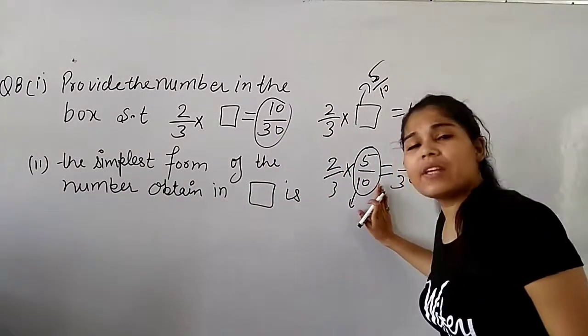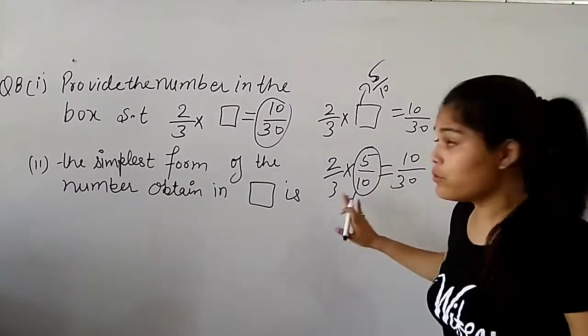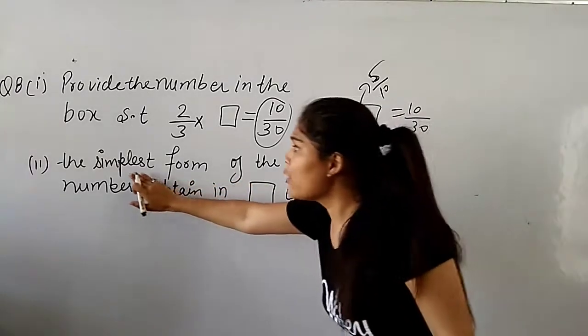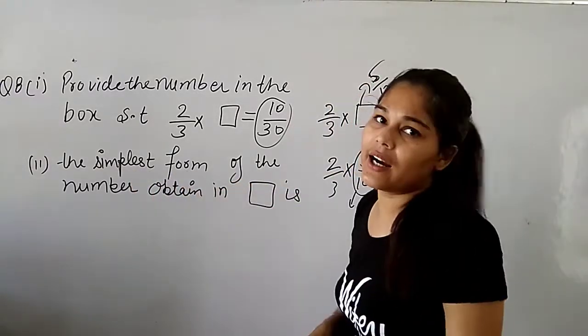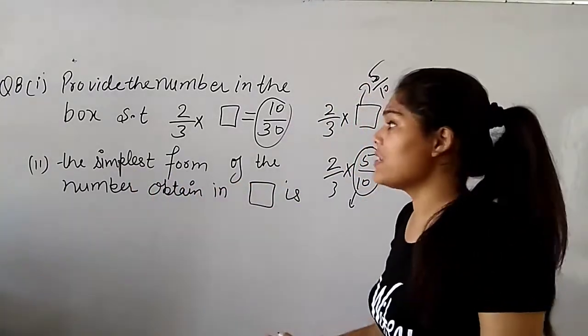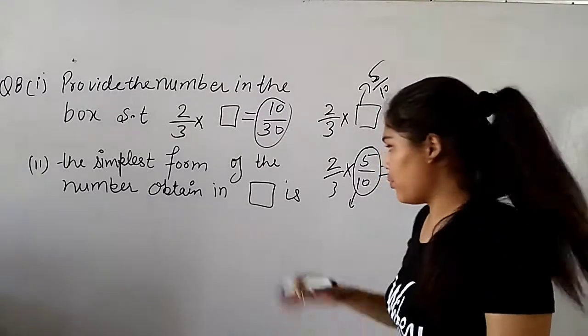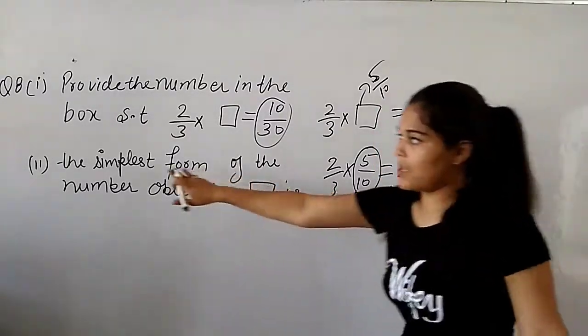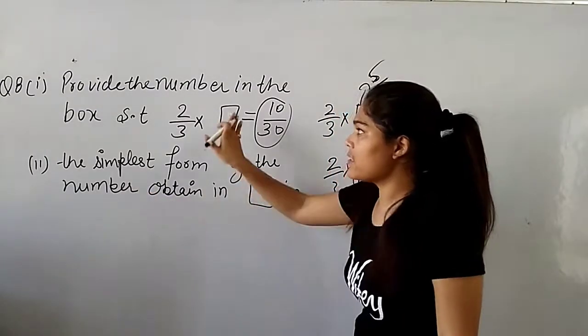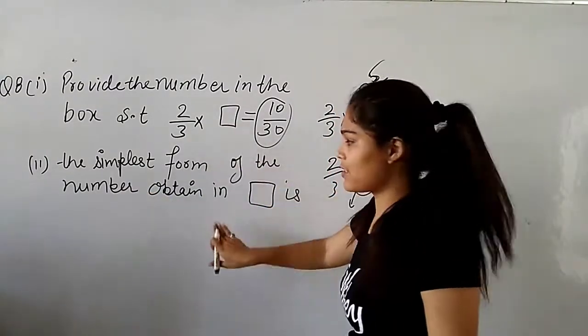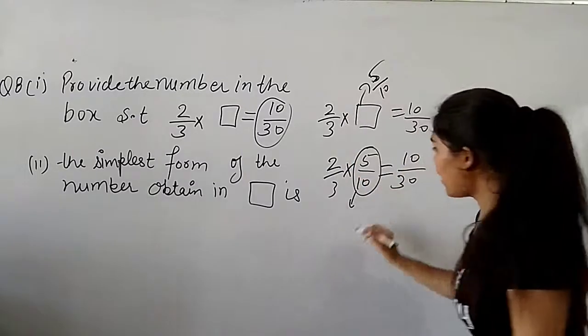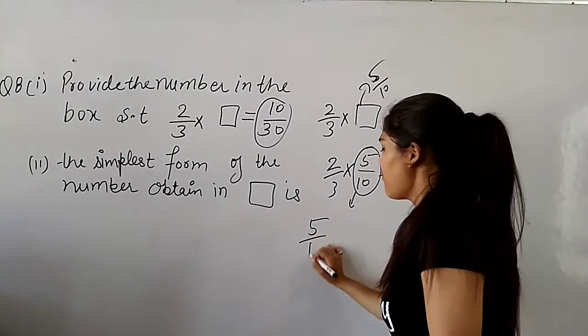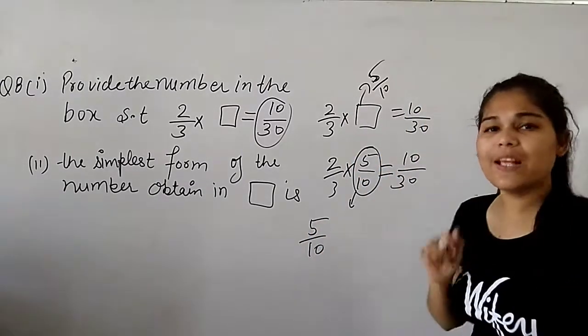Which is the simplest form will be in the box. So, what will you do? 5 by 10. And what is the simplest form?